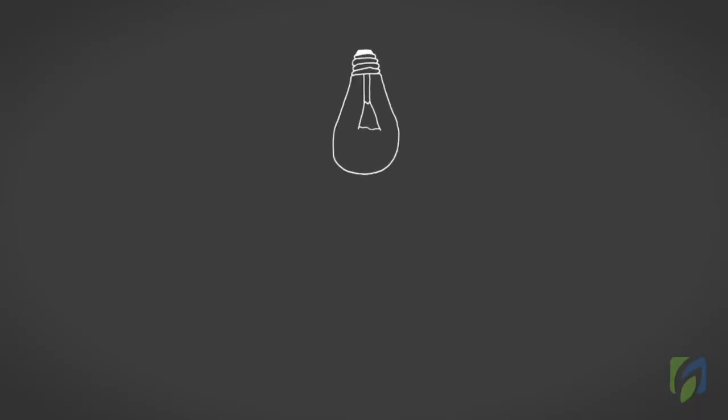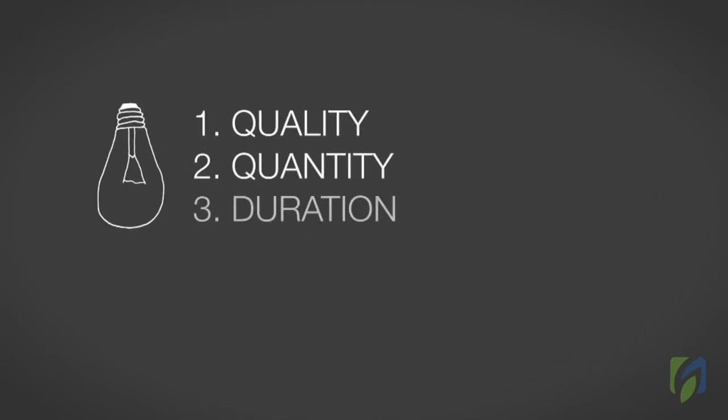Light is one of the environmental factors that affect plant growth. There are three principal characteristics of light that affect plant growth. These are quality, quantity, and duration.